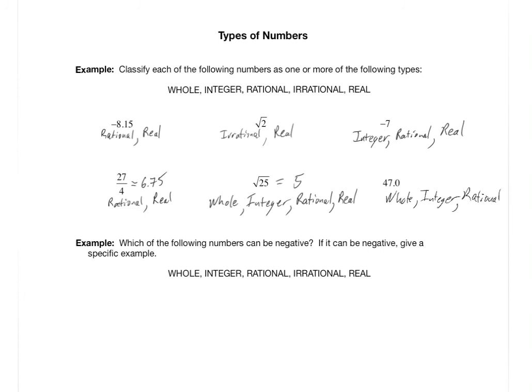There's one more question: which of the following number types can be negative? If it can be negative, give a specific example. Can whole numbers be negative? No — whole numbers are the counting numbers along with zero: 0, 1, 2, 3, 4, 5, 6 — there are no negative whole numbers.